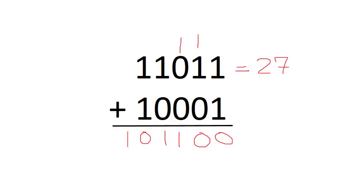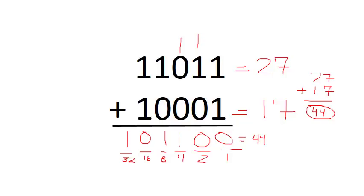1 1 0 1 1 is equal to 27 in decimal. 1 0 0 0 1 is equal to 17. If we add those, we get 44. And if we convert our answer 1 0 1 1 0 0 from binary to decimal, we see that the answers are the same. The value is 44.